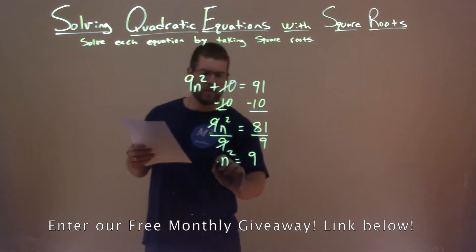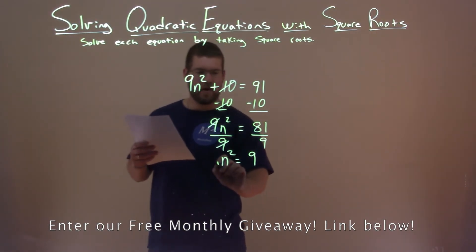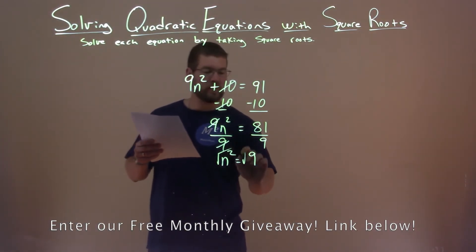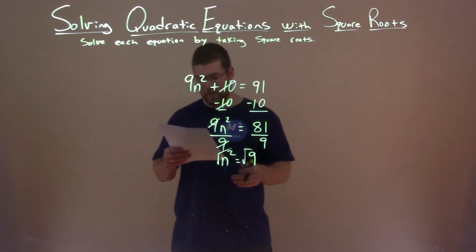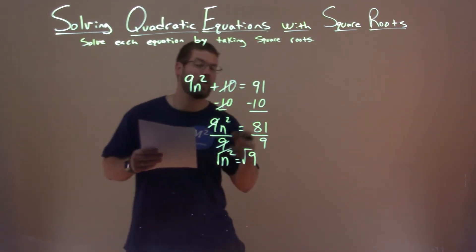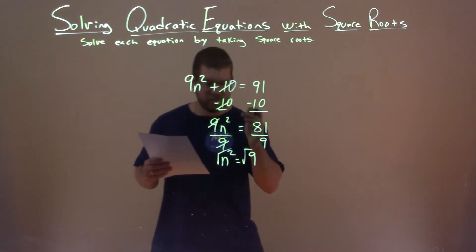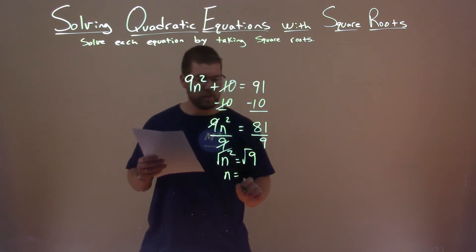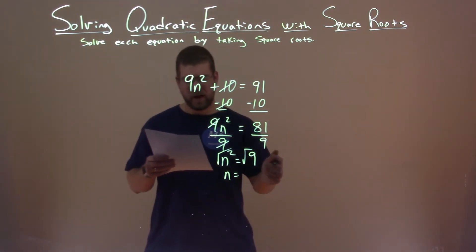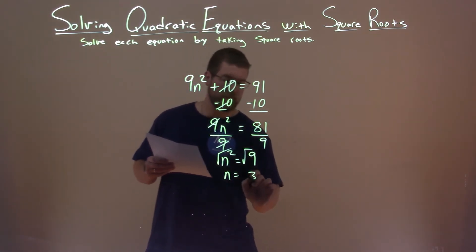Now we take the square root of both sides. 81 divided by 9 is 9, so taking the square root of both sides leaves n by itself. The square root of 9 is 3.